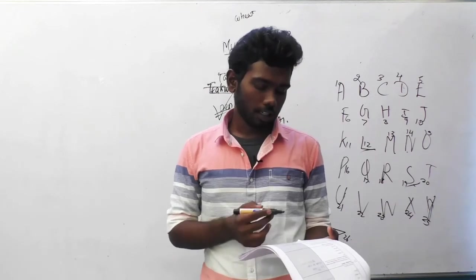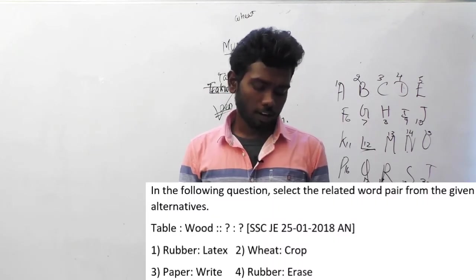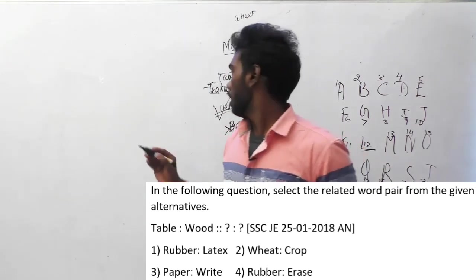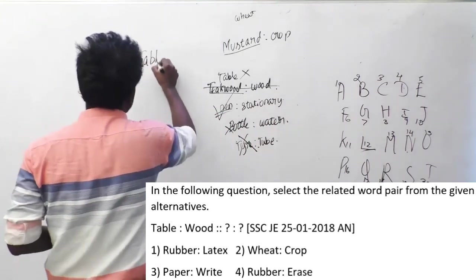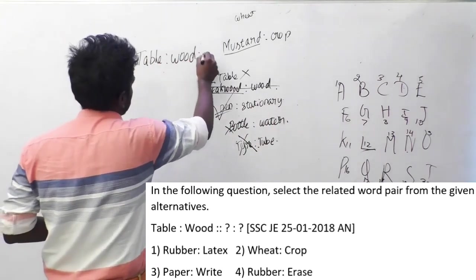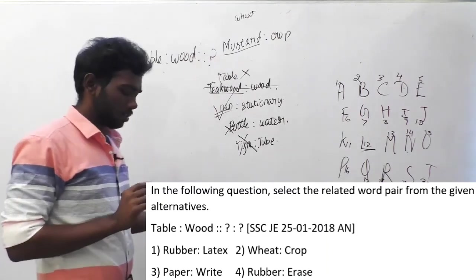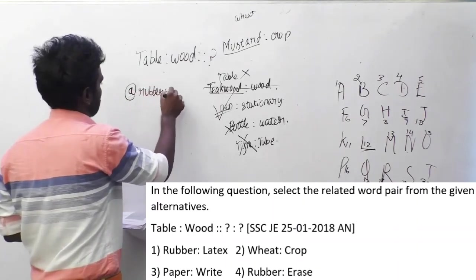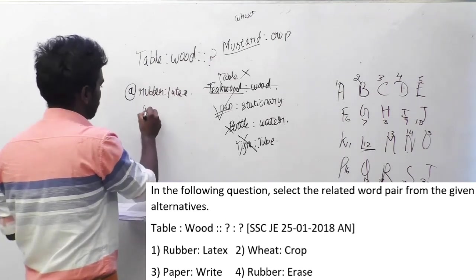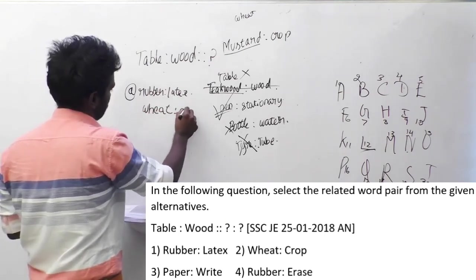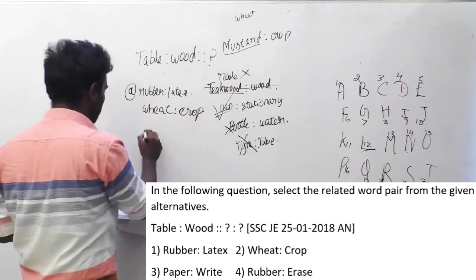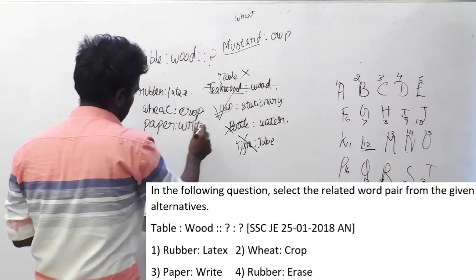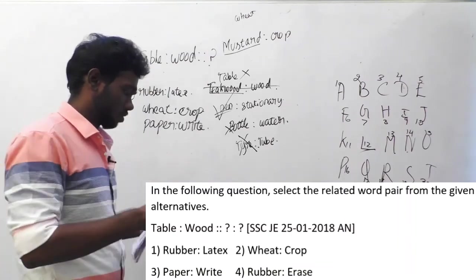We will move on to question number 132. In the following question, select the related word pair from the given alternatives. Table is to wood implies dash. We have to initially find the relation between the two words. Table is made up of wood — form the sentence like this to understand the question easily. Option A is rubber is to latex.